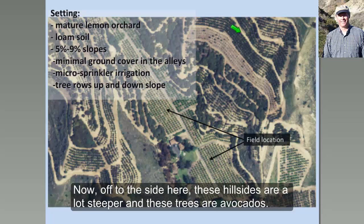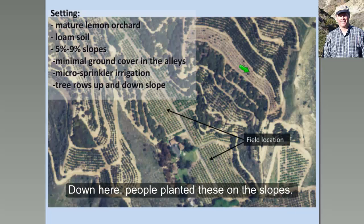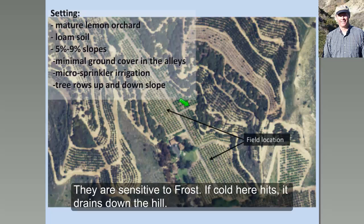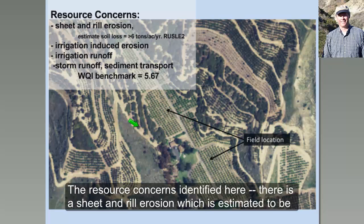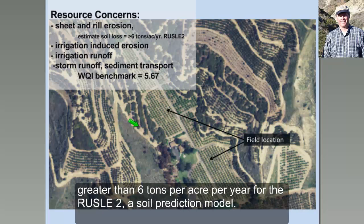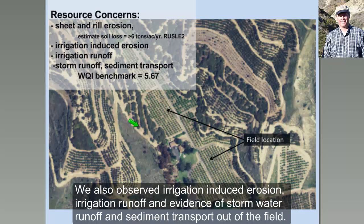These trees up on the hillsides are avocados. People plant avocados on the slopes because they're very sensitive to frost, and cold air typically drains downhill. The resource concerns identified in this field include sheet and rill erosion, estimated to be greater than six tons per acre per year with RUSLE-2, which is a soil erosion prediction model. We also observed irrigation-induced erosion, irrigation runoff, and evidence of stormwater runoff and transport of sediments out of the field.